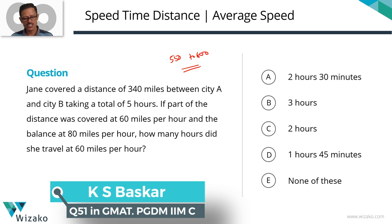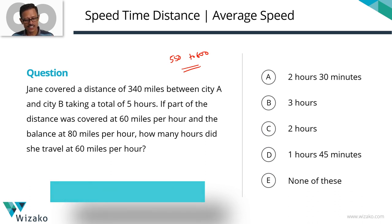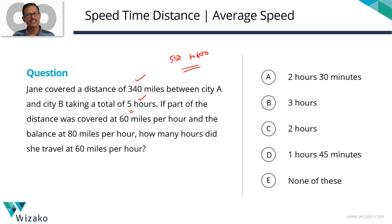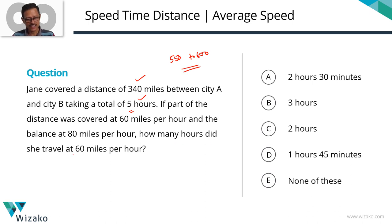Jane covered a distance of 340 miles between city A and city B, taking a total of 5 hours. Total distance and total time are both given. A part of the distance was covered at 60 miles per hour and the balance at 80 miles per hour — she has travelled at two different speeds. What we need to find out is how many hours did she travel at 60 miles per hour.